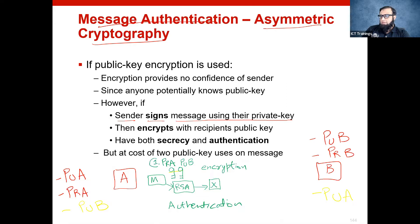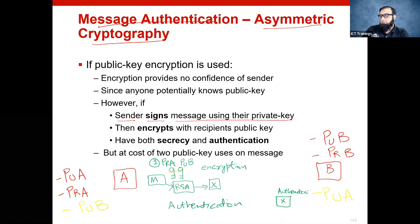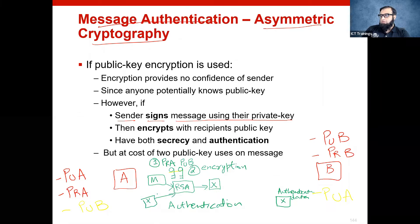In the first step, we will calculate X using our private key and keep it on the side — this is my authentication data. Then in the second step, I will input this X again into the RSA algorithm, and I will use the other party's public key. So the output will be Y, an encrypted output.